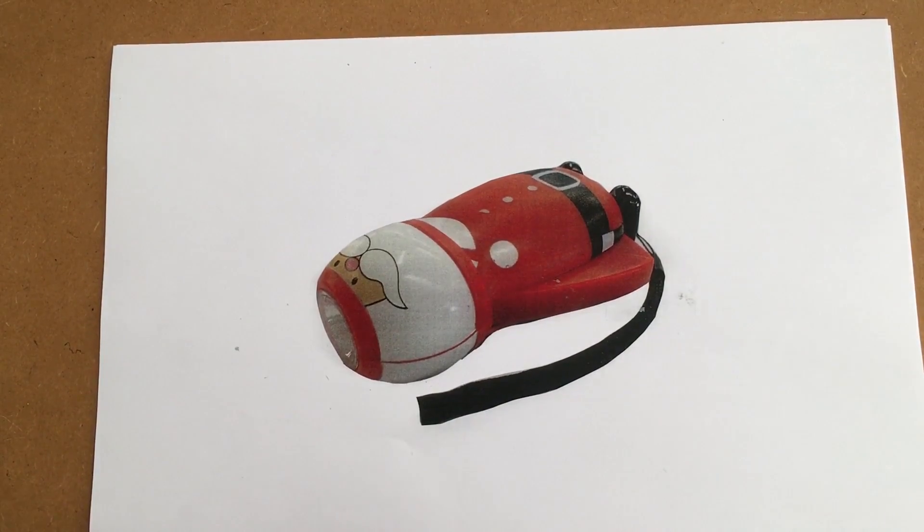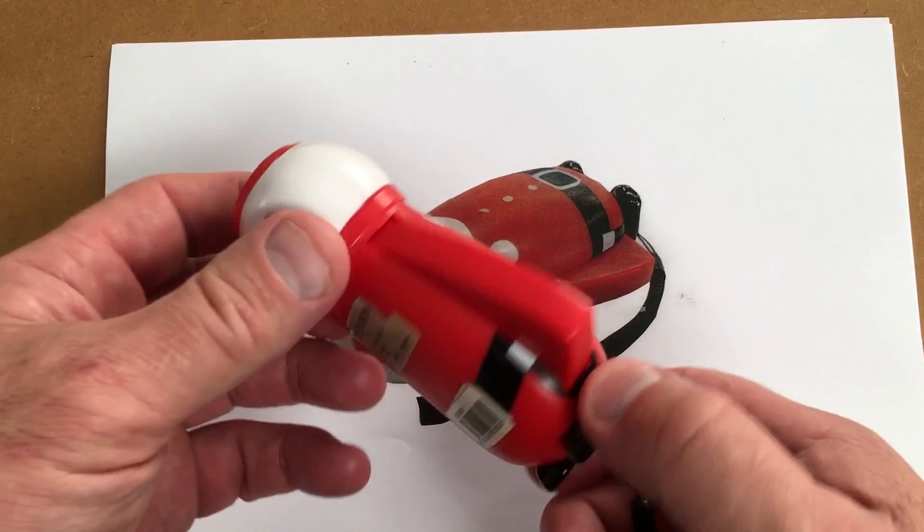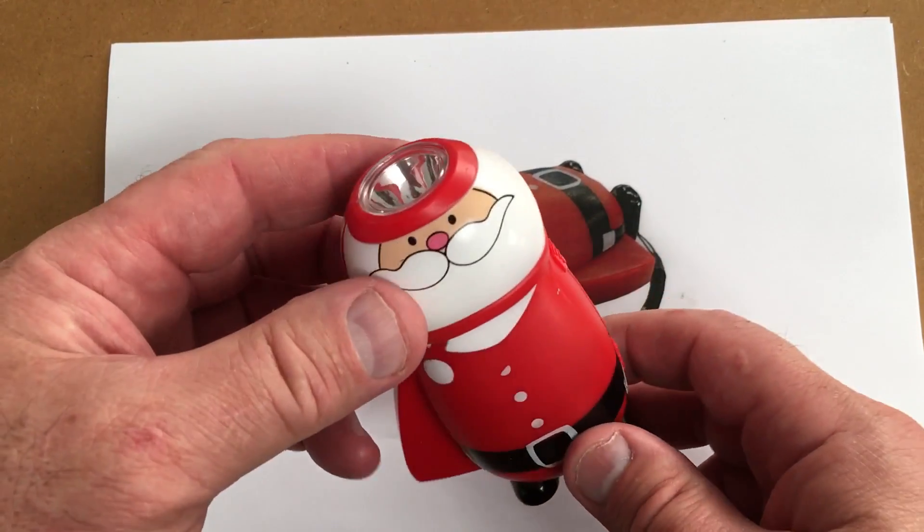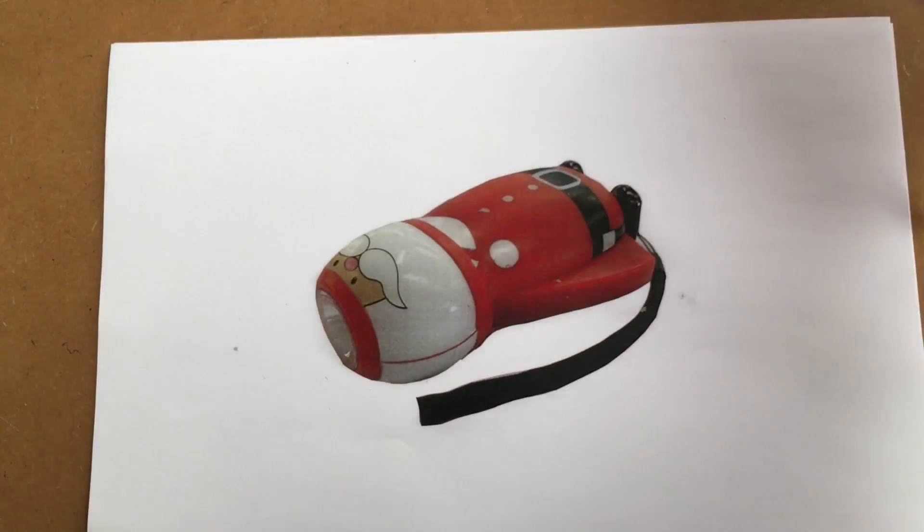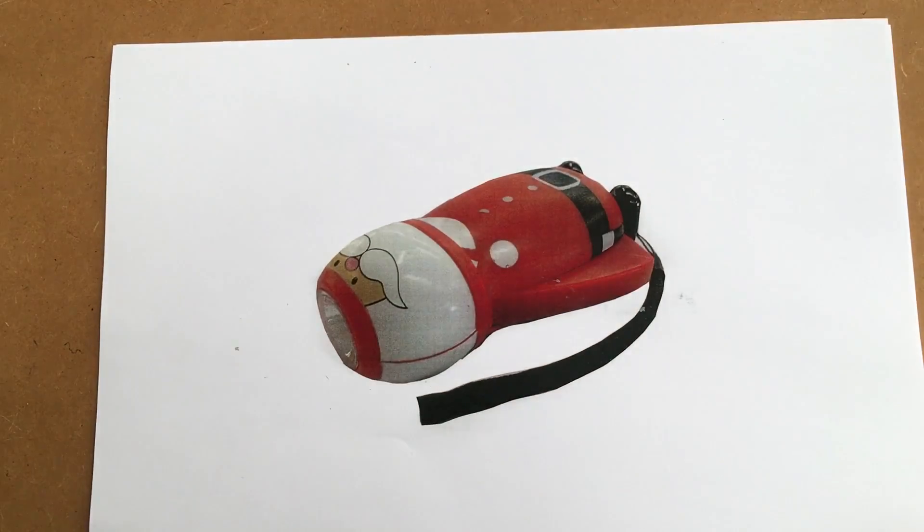Hi everybody, so what I'm going to do now is practically analyze this torch and get some information down on the page using ACCESS FM. A for Aesthetic, C for Cost, C for Customer, E for Environment, S for Size, S for Safety, F for Function, and M for Materials. This is the second video using this example.